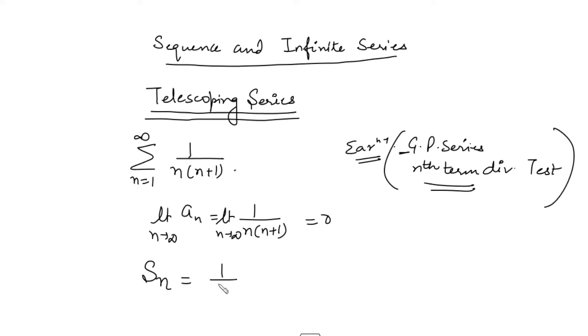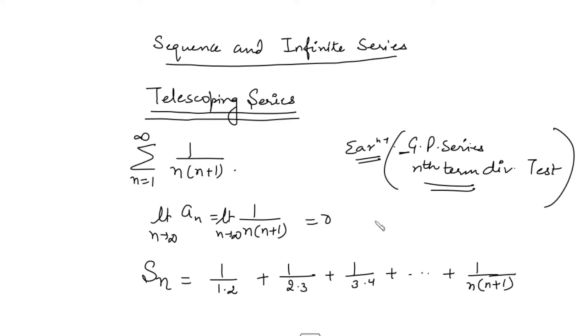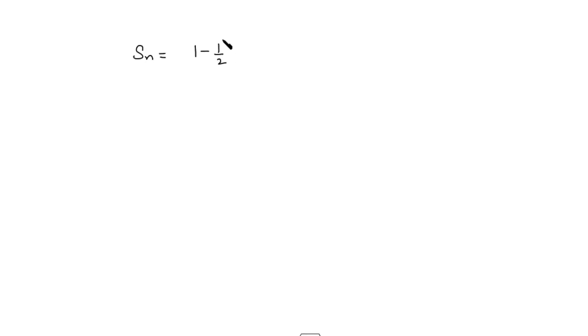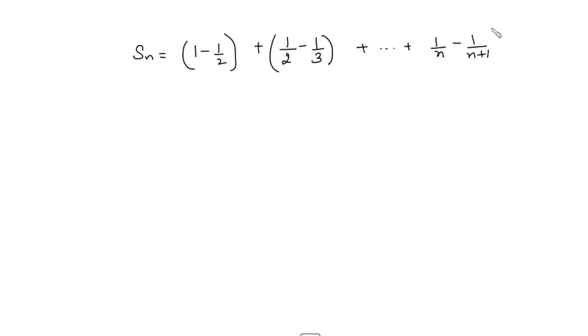The partial sum Sn is: 1/(1·2) + 1/(2·3) + 1/(3·4) + ... + 1/[n(n+1)]. Using partial fractions, each term can be written as a difference: 1/(1·2) = 1 − 1/2, then 1/(2·3) = 1/2 − 1/3, and so on, up to 1/n − 1/(n+1).